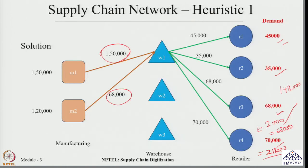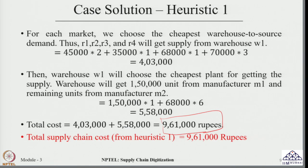The final network solution following Heuristic 1 shows manufacturer one exhausting its capacity of 1,50,000 to supply four retailers, and the balance of 68,000 units supplied from manufacturer two to fulfill the remaining requirement of retailer four. Total cost following Heuristic 1 is 9,61,000 rupees. Let me also demonstrate this solution in the Excel sheet.